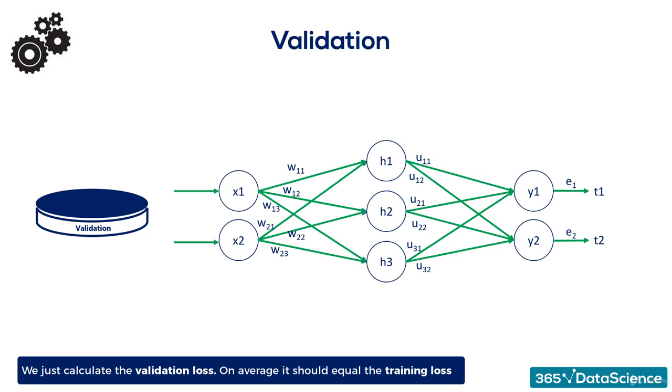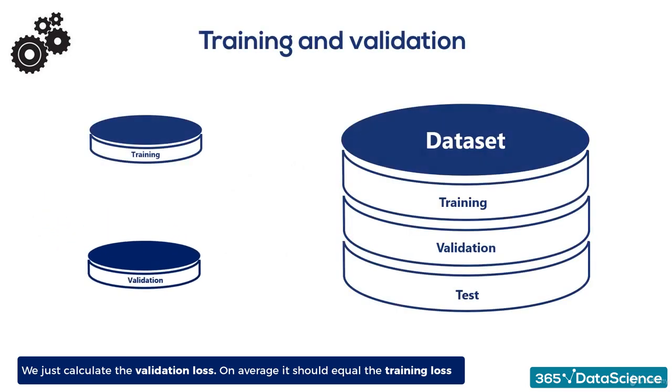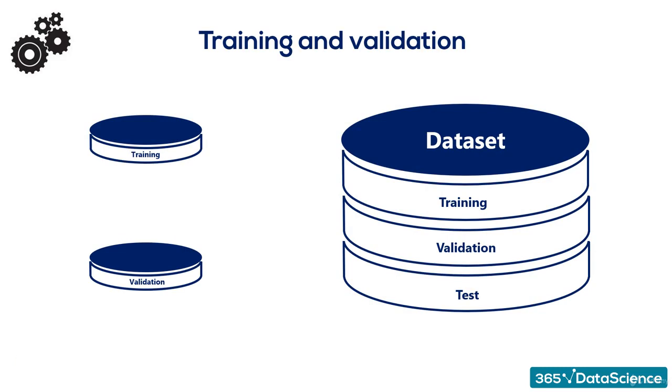On average, the loss function calculated for the validation set should be the same as the one of the training set. This is logical, as the training and validation sets were extracted from the same initial dataset containing the same perceived dependencies.